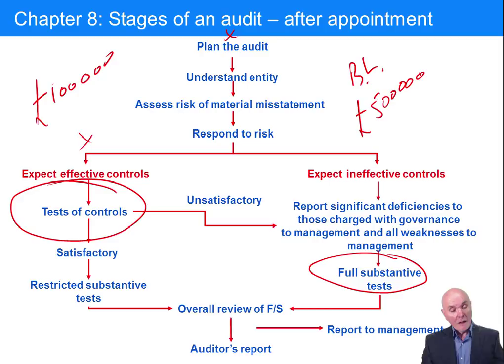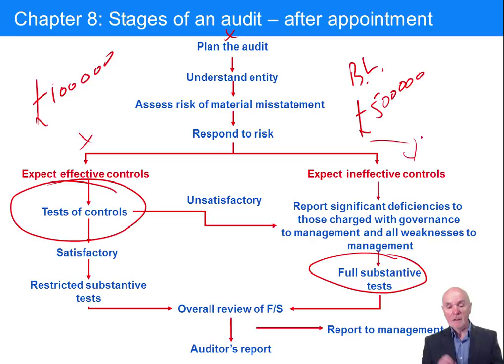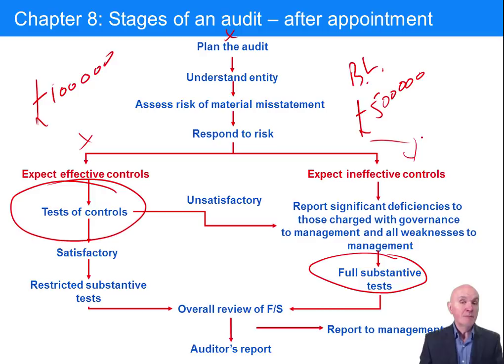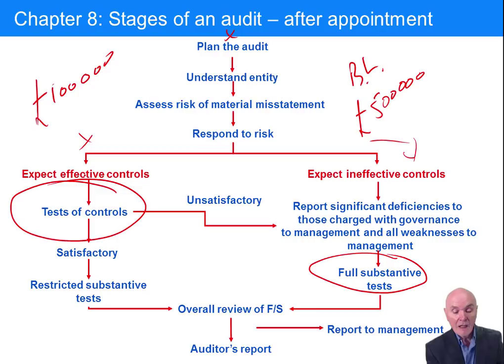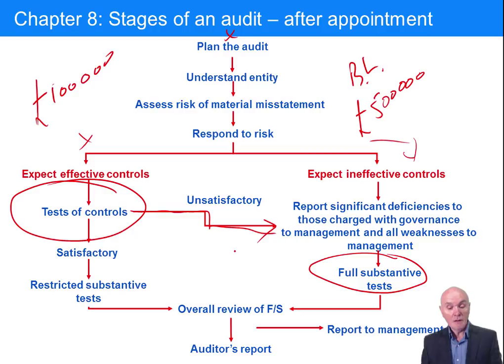Generally speaking, you want to go down the expect-effective-controls pathway. The only reason you'd go down the full substantive route is for occasional businesses with very low volume, high-value transactions — like a property company buying and selling 10 properties in a year. Sometimes you begin testing controls and find the authorizations and reconciliations that were supposed to be done weren't being done, so you have to change horses and move over to substantive tests.